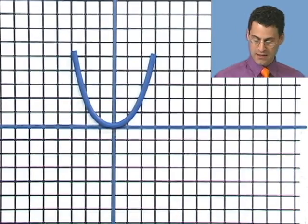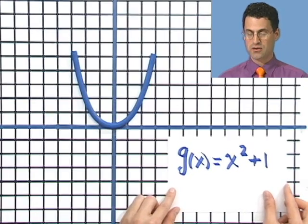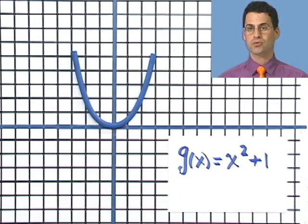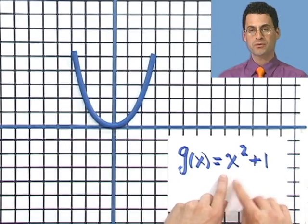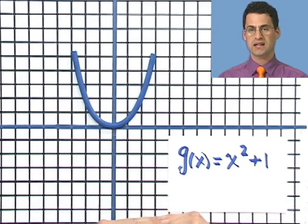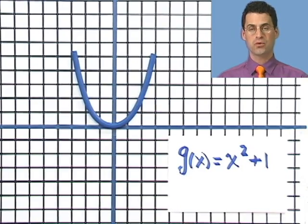So the first one is going to be what I'm going to call g(x). I want to graph this: g(x) = x² + 1. Well, when I see a plus 1 that's added to the function, what that means is I'm going to be raising the y values. Changing y's means go up or go down, and a plus 1 means I'm going to go positively up one unit.